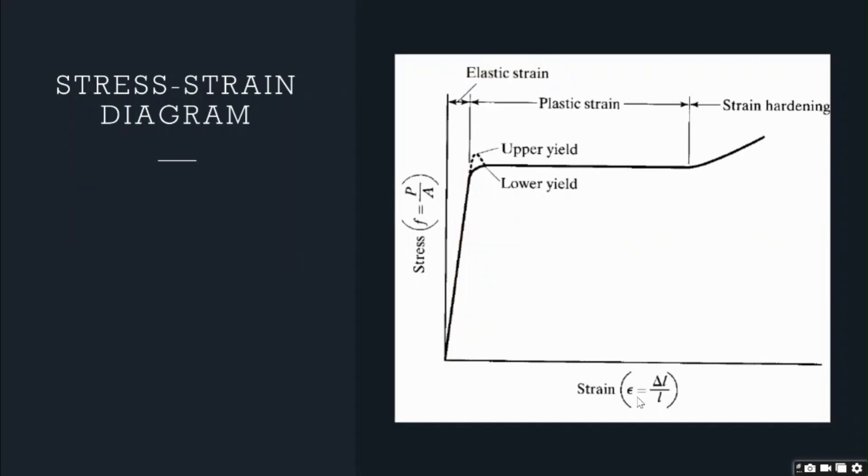Let's now look at the second phase of the stress-strain diagram. We'll name it as B. Here, as you can notice, the stress and strain are not linear. So it does not obey Hooke's law.